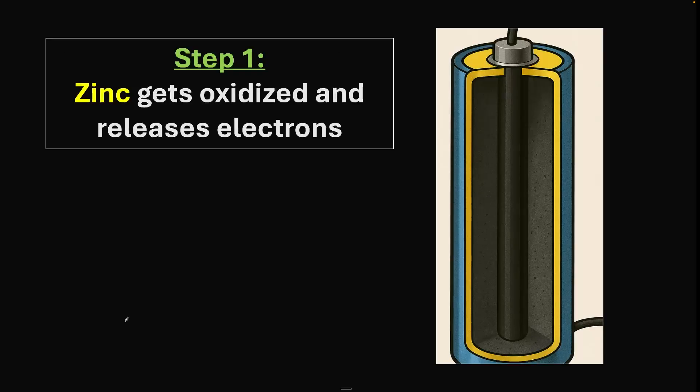Step one: zinc gets oxidized and releases electrons. The zinc metal in the zinc casing gets oxidized to become Zn²⁺ ion and releases two electrons. When zinc becomes an ion, it goes into the electrolyte paste and releases these two electrons.